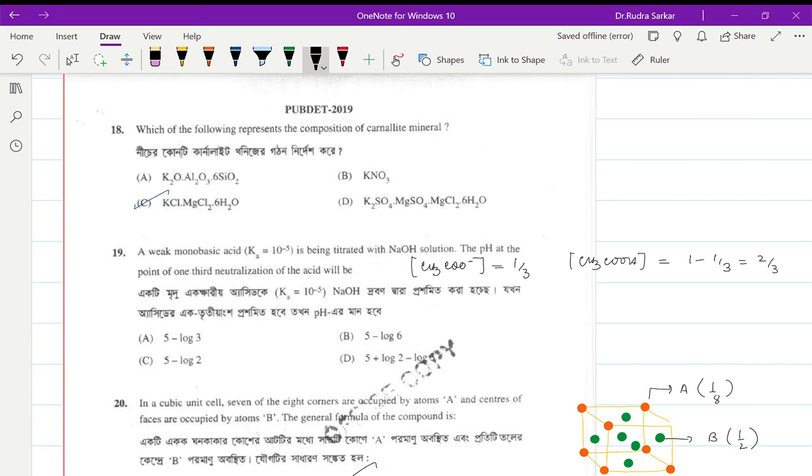pH is pKa plus log of the concentration of the salt by the acid, so pH equals -log Ka plus log of the salt-to-acid ratio.